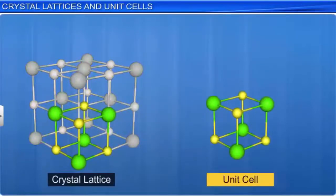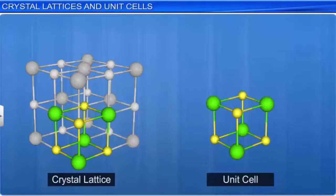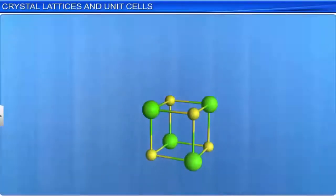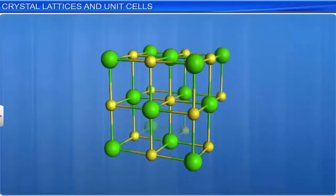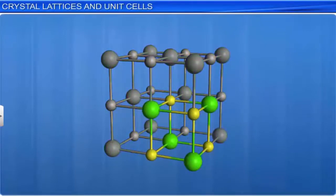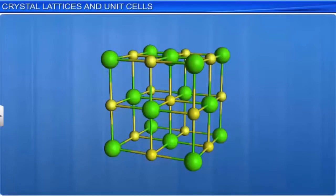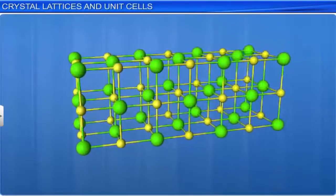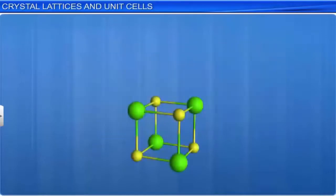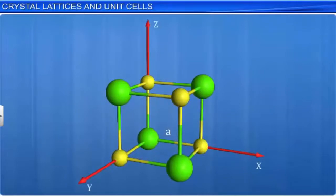A crystal lattice can be subdivided into several cells known as unit cells. A unit cell is defined as the smallest portion of a crystal lattice which, when repeated in different directions, generates the entire lattice. A unit cell represents the shape of the entire crystal, and a crystal may consist of an infinite number of unit cells. A unit cell is characterized by distances A, B, and C along three edges, and angles alpha, beta, and gamma between pairs of edges.